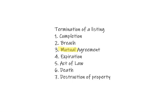Death of either party terminates a listing — and that means death of the managing broker, not you as the agent, because the listings belong to the managing broker. If you were to pass away, the managing broker would still have that listing and would reassign it to a new agent in the office. So this termination applies to the death of the managing broker or the client, not necessarily the individual agent.